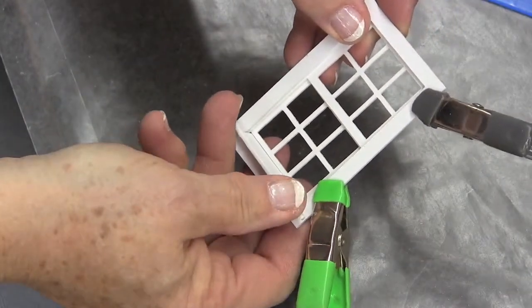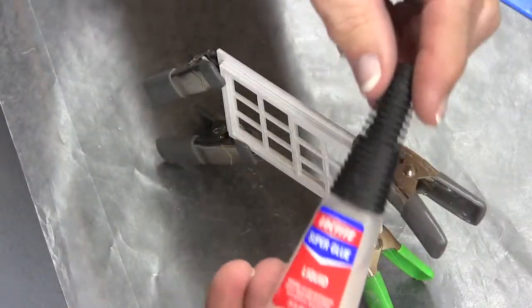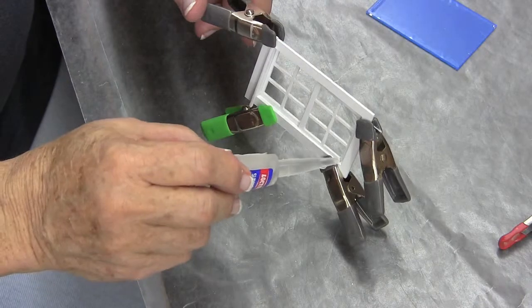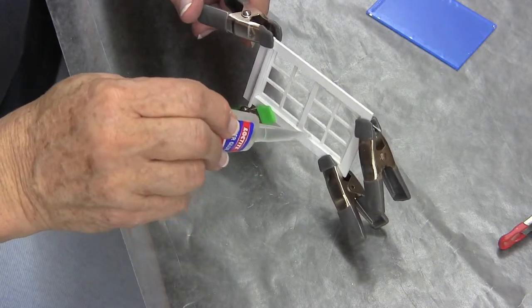Use super glue or CA glue and run a bead along the edges. There's also a plastic solvent glue. The glue will seep and wick onto the adjoining members.